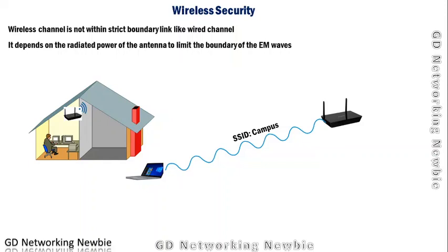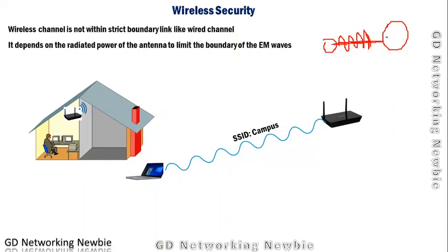In this video we are going to discuss one very important topic in wireless security — specifically wireless local area network (LAN) security. We have discussed the wireless channel in some previous videos. The wireless channel is not strict like the wired channel. In a wired channel, computers are connected by cables and all signals travel through those cables, making it a controlled medium.